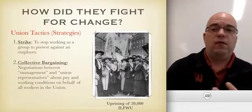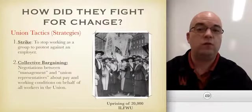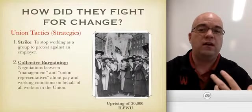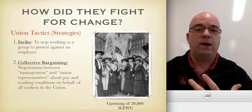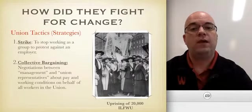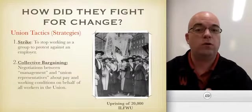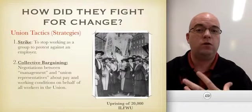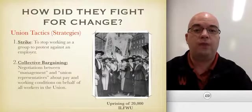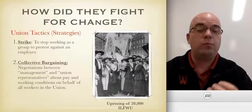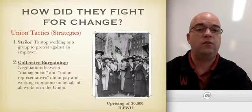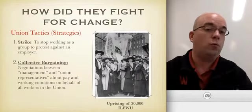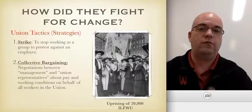Unions generally use two tactics to fight for change. One is going on strike, which basically means you're going to stop working. As a group of workers in a factory or industry, you decide to shut down production by not working and protest out in front of the factory to demand higher salary, safer working conditions, or more benefits — preventing the company from making a profit. Strikes were pretty common during the 1800s and early 1900s during the industrial age. We'll talk later about one particular strike called the Homestead Strike, which was a very violent strike that did not end well.